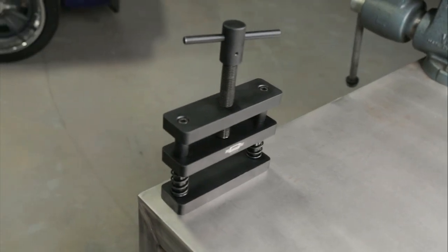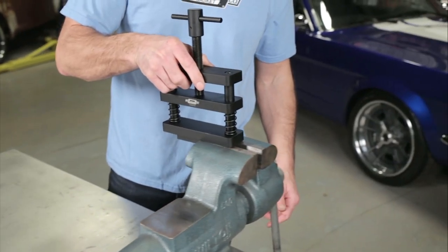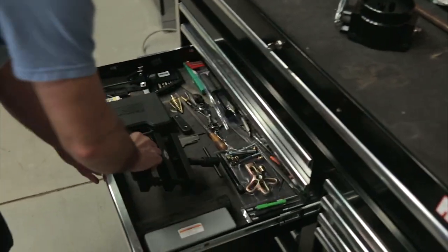Versatility is the key. Our connecting rod vise can be permanently mounted to your workbench or simply clamp it into your shop vise, then drop it in the toolbox when you're not using it.